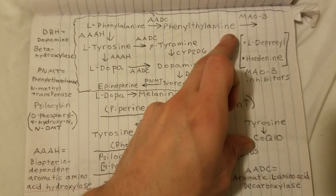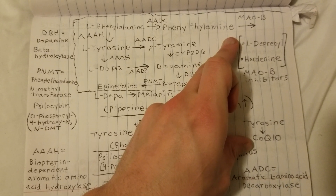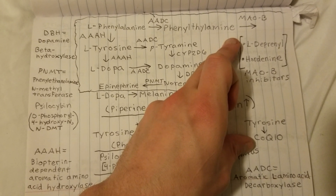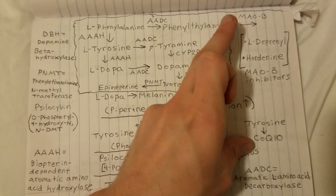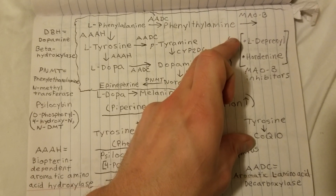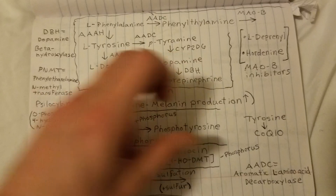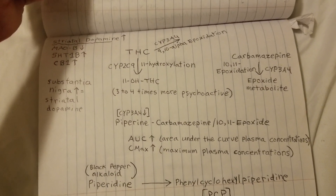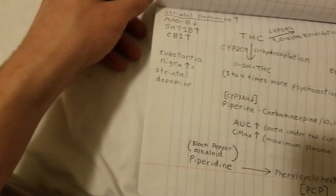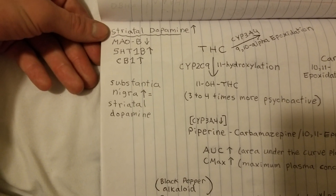L-deprenyl is prescribed as a monoamine oxidase B enzyme inhibitor, which seems to be very effective for extending lifespan expectancy in rodents. They've started undergoing clinical trials in humans to verify this effect. There are theories as to how it works so effectively, and I believe it has to do with increasing striatal dopamine.